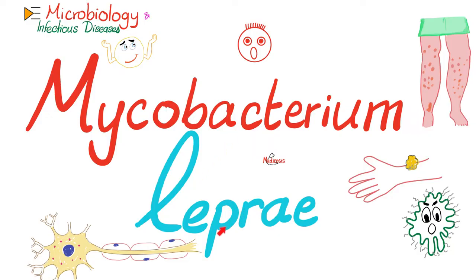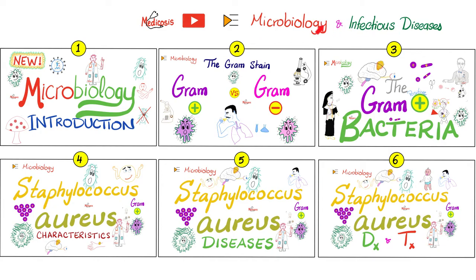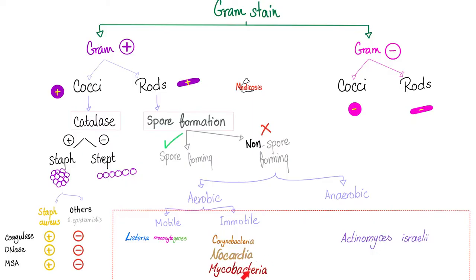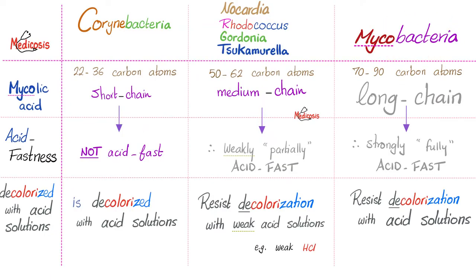Recall that we have two types of leprosy: tuberculoid leprosy versus lepromatous leprosy. Please watch the videos in this playlist in order. Mycobacterium leprae is an immotile, aerobic, non-spore-forming, gram-positive rod. While it does not stain well with gram stain, it is anatomically gram-positive — it has a similar cell wall. Mycobacteria have long-chain mycolic acid, and that's why they are strongly acid-fast, i.e., acid-resistant.